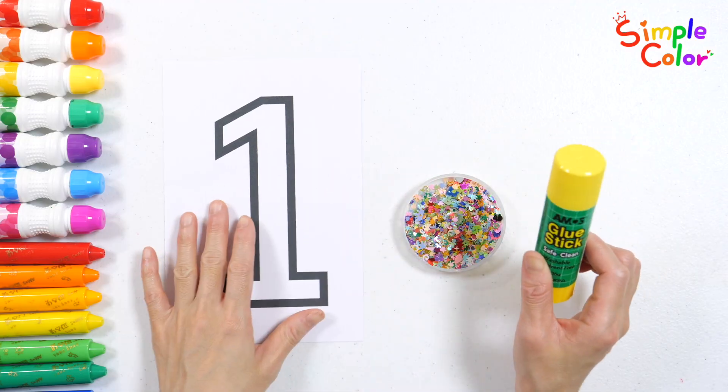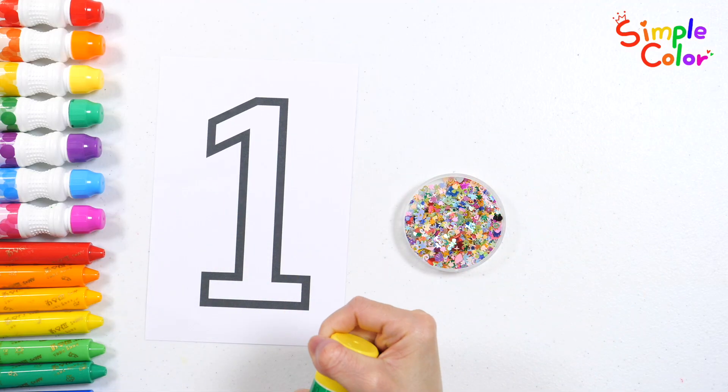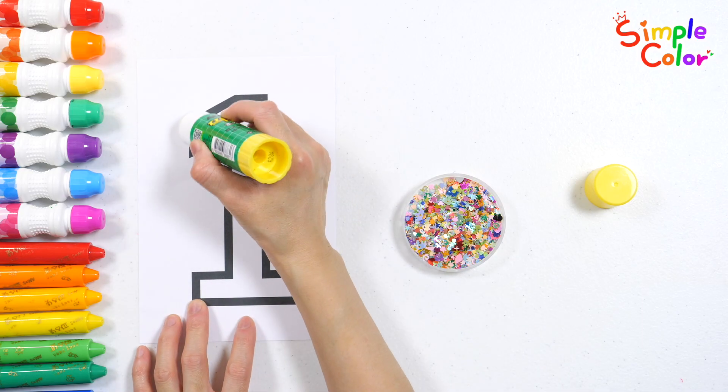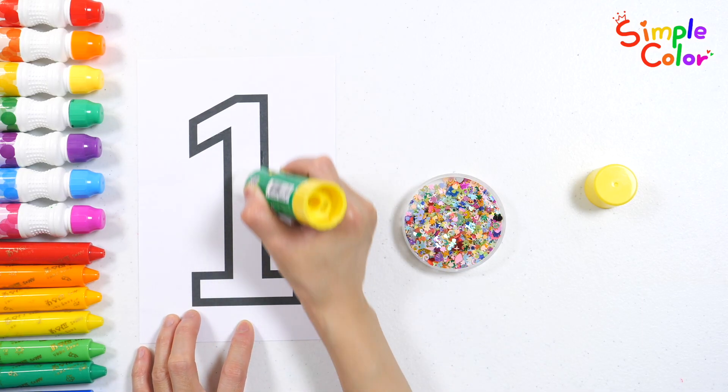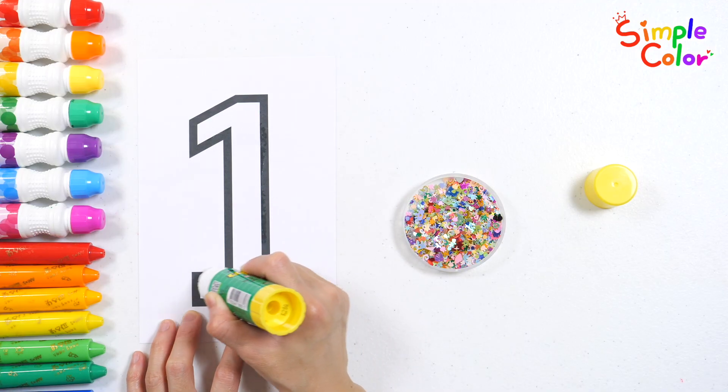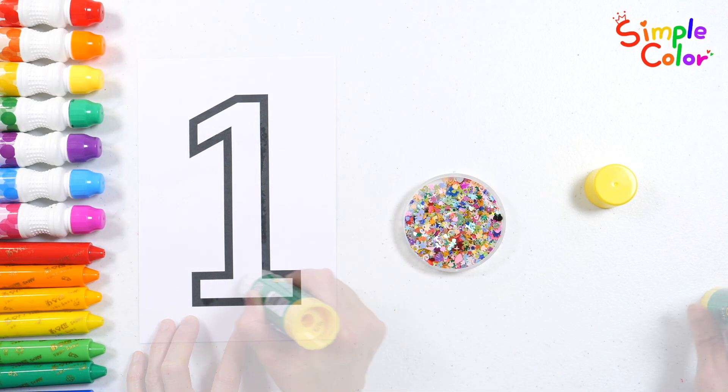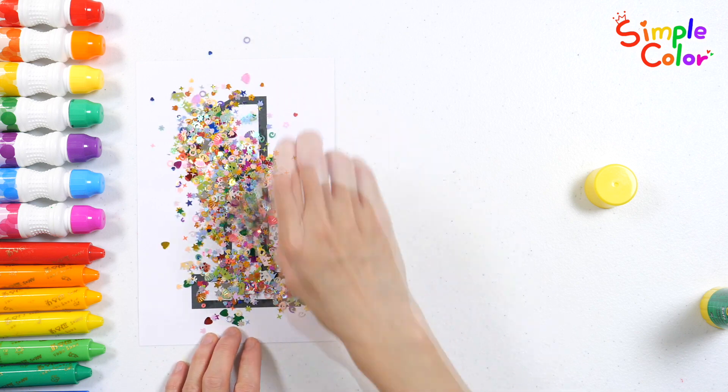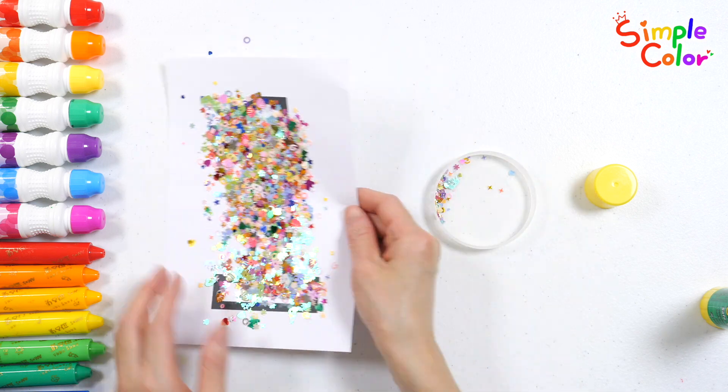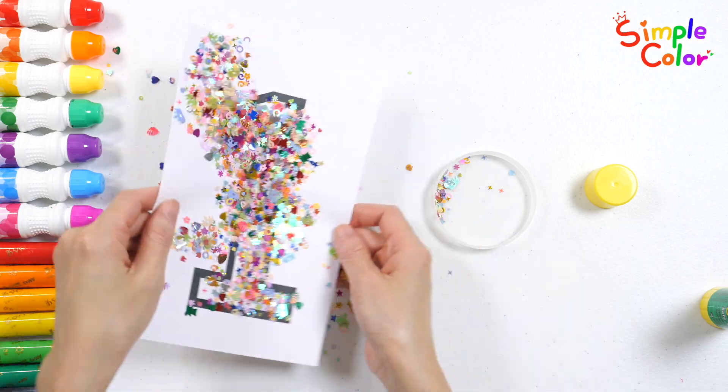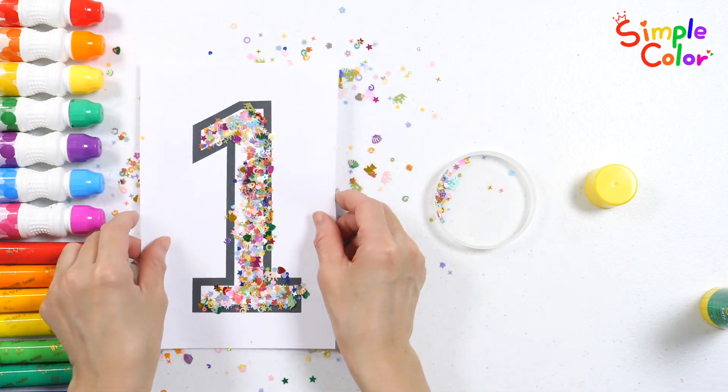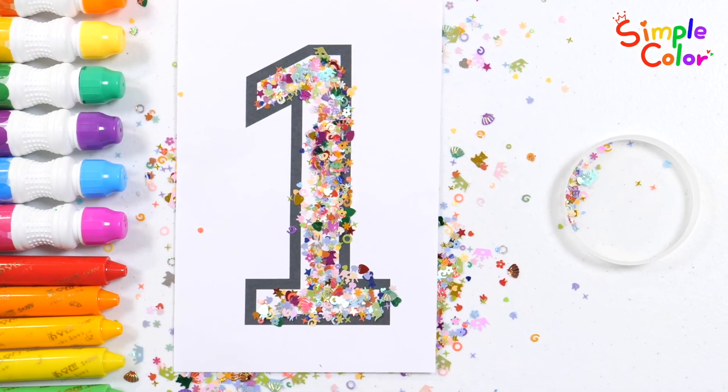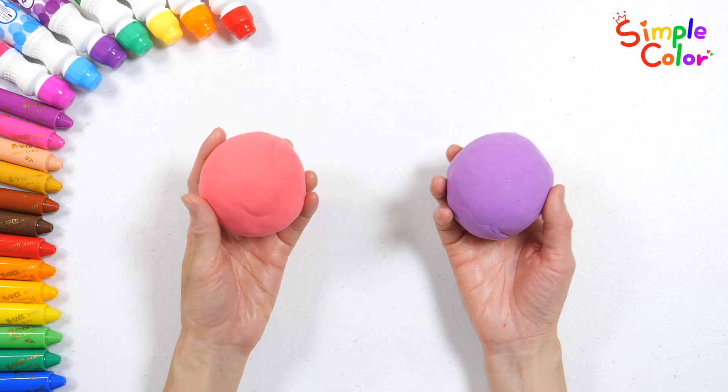This is the number one. Shall we decorate it with glue and glitter? First, let's put some glue on the number one. Very good! Now sprinkle some glitter on top. Let's shake it gently to spread the glitter. Wow! Now we have a sparkly, pretty number one. Ta-da!